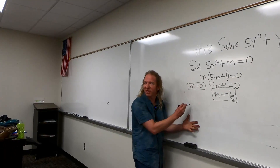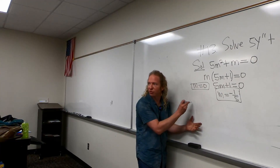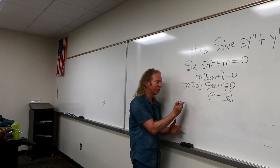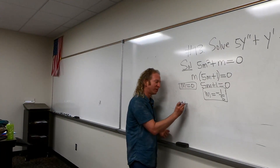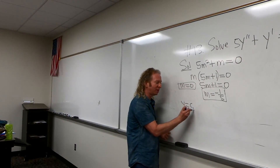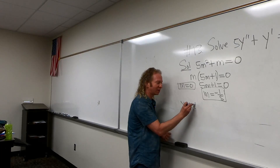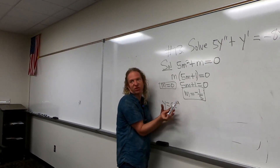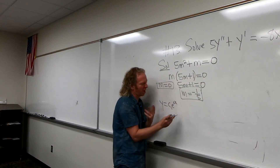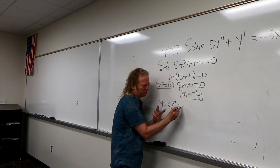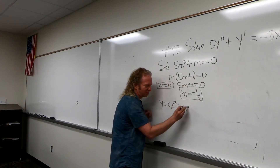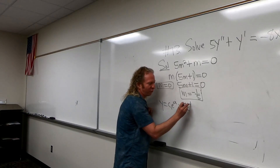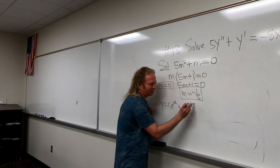So those are our m's. Now we can write down our solutions. We have distinct real roots, so it's C1 times e to the 0x, which is just C1, plus C2 e to the negative 1/5 x.